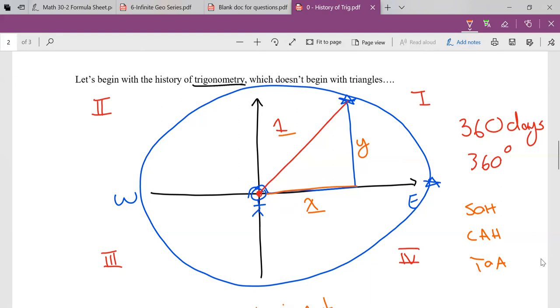So there you go, the history of trig. When we get into grade 12, we're going to expand on that a little bit more, and it's actually going to become really important when we start talking about radians instead of degrees. Quick little history lesson for you. Hope you enjoyed it.